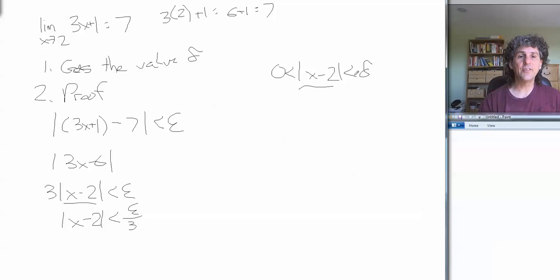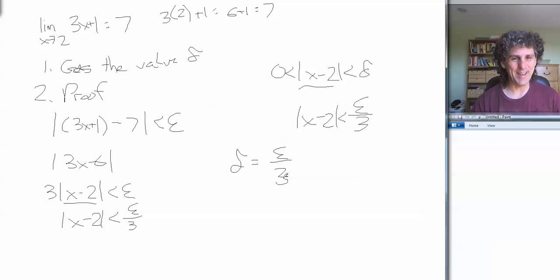So that suggests then that if delta were epsilon over 3, we'd basically be home free. The absolute value of x minus 2 would then be less than delta. So let's make the guess that delta equals epsilon over 3. That was a 3. I meant that to be a 3 with a little hiccup in it. So trust me.